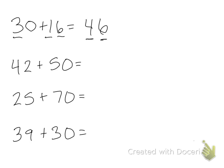On this one we have 42 plus 50. So if we have 4 plus 5, so 4 plus 5 is 9 and then what's 2 more? Well, that's going to be 92.